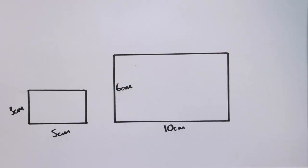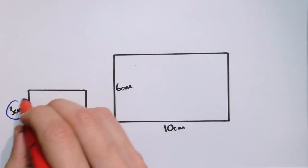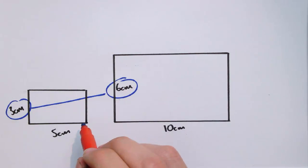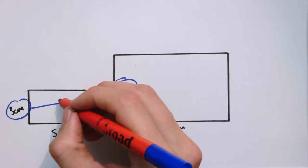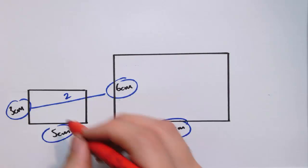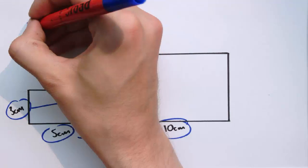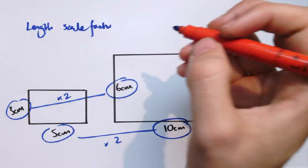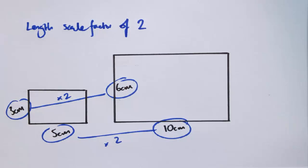I've got two rectangles here and they are similar rectangles, so the scale factor that takes you from the smaller rectangle to the larger rectangle, that takes you from 3 to 6, is 2, and also takes you from 5 to 10. So we've got a length scale factor here of 2, where all the lengths will scale up.